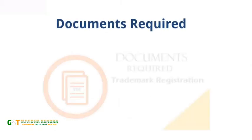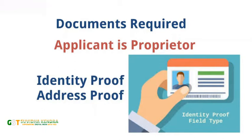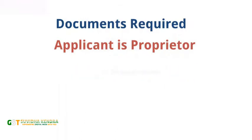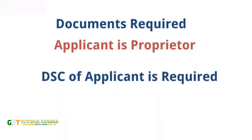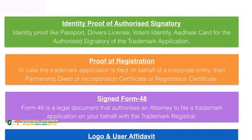Regarding documents: if the applicant is a proprietor, ID proof and address proof of the proprietor is required. A soft copy of the trademark is required to be uploaded and a digital signature certificate is required for signing the trademark application in electronic form. If the applicant is a person other than an individual, form 48 is filed for the authorized signatory, along with ID proof and address proof of the authorized signatory. If the business is registered under Udyog Aadhar, the Udyog Aadhar registration certificate and registration certificate of such business or organization is also required.